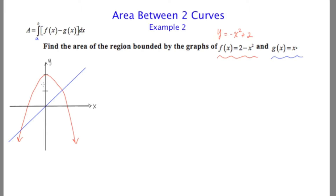My objective is to sketch these, which I've done, and clearly identify which curve is on top and which curve is on the bottom. Clearly the red curve, or the parabola, is on top, and the line is on the bottom. What I'm looking for is the area of the region in between. The next thing I'm going to do is draw a representative rectangle that connects the top curve to the bottom curve.